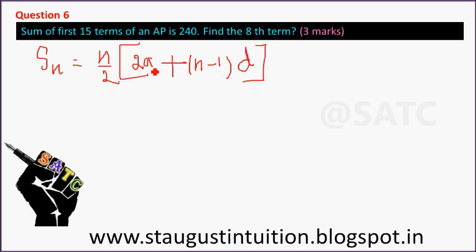Here A means first term, D means common difference. S is equal to S15.